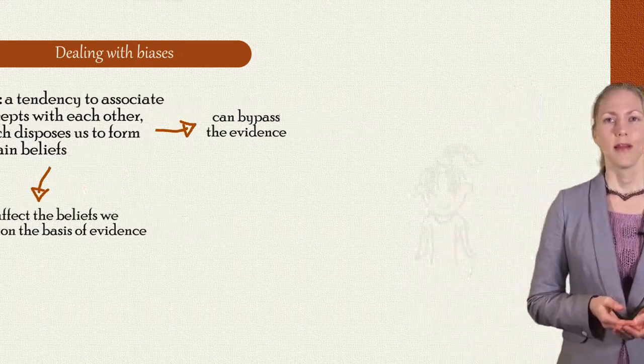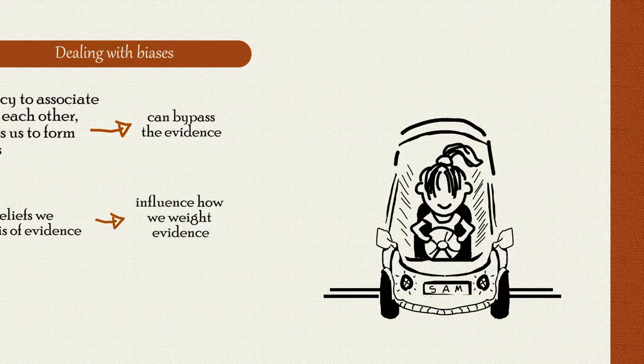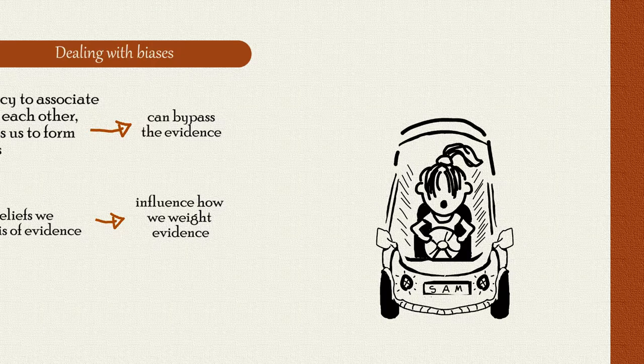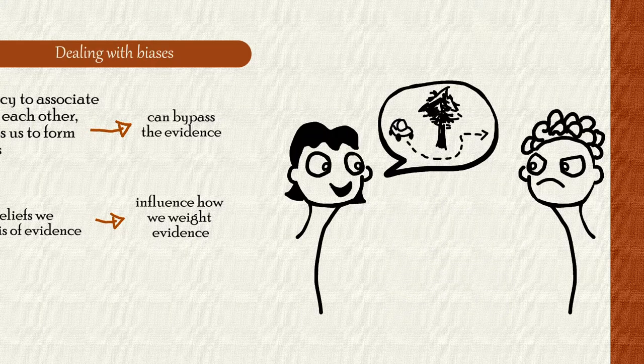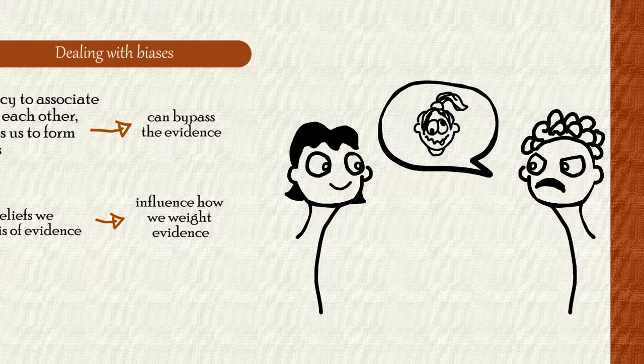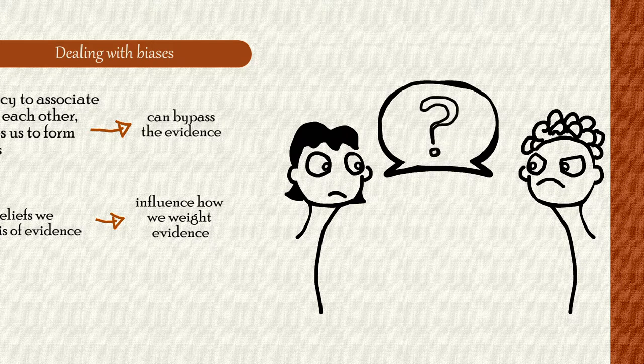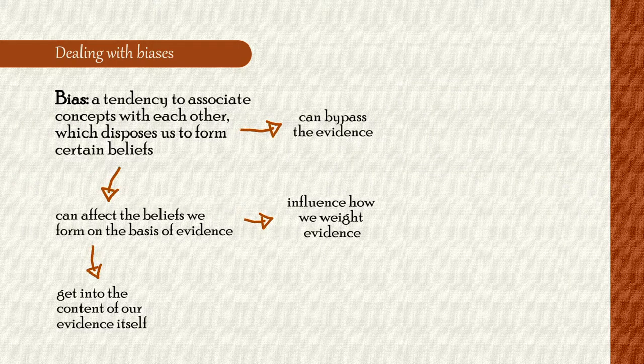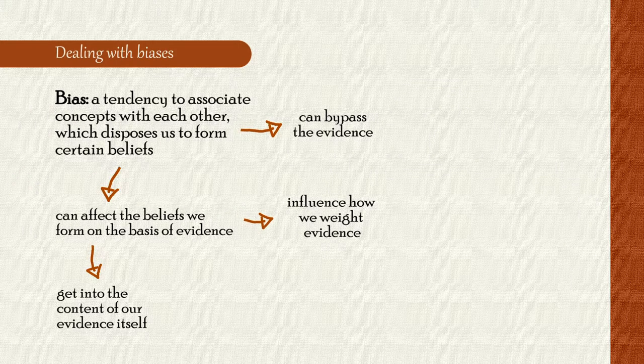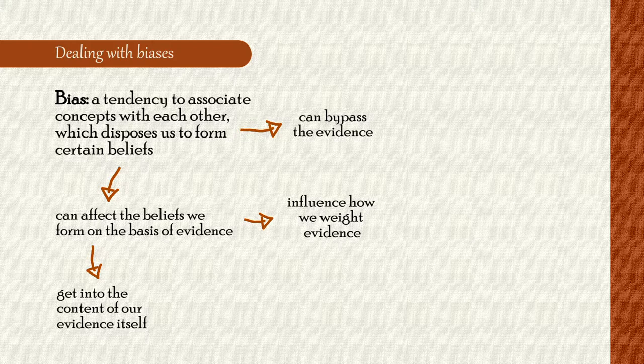How? Well, first, we saw in the previous segment that they affect the way that we weight our evidence. So whether you think Sam swerved her car for a good reason or just because she's reckless depends partly on whether you are biased for or against her. But second, biases can get into the very content of our evidence itself. How can they do this?